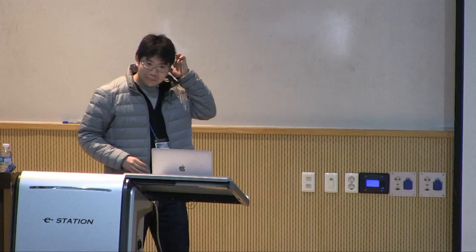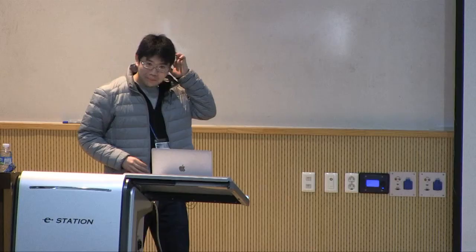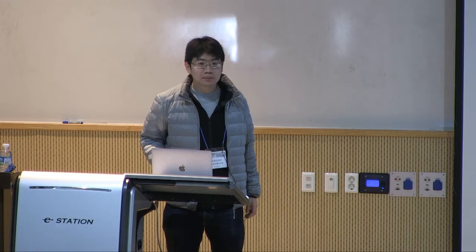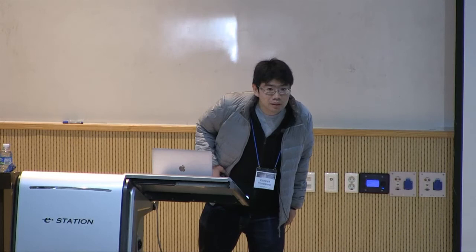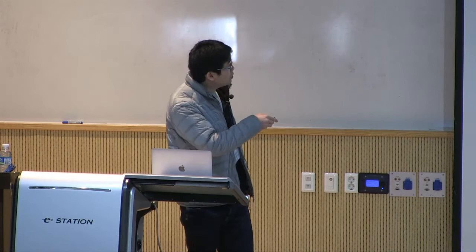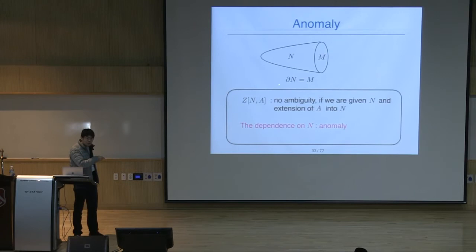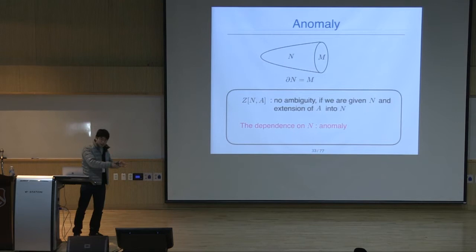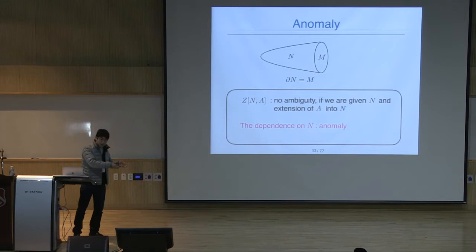A question was raised: does the dependence on N mean topological or geometric? It can be geometric — for example, we specify the metric on N and the partition function may depend on that metric. In some cases the dependence is topological. If this dependence is geometrical, it turns out that corresponds to a perturbative anomaly. If this dependence is just topological, it corresponds to what is called a global anomaly.